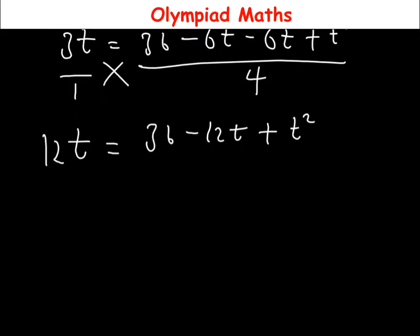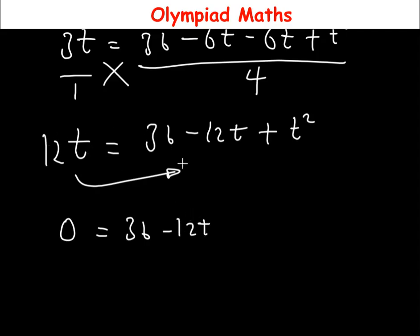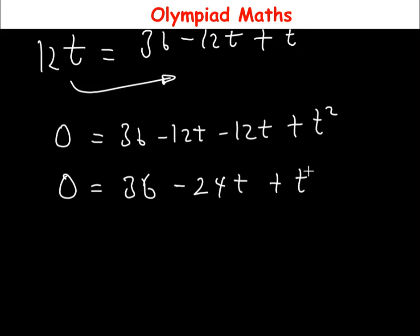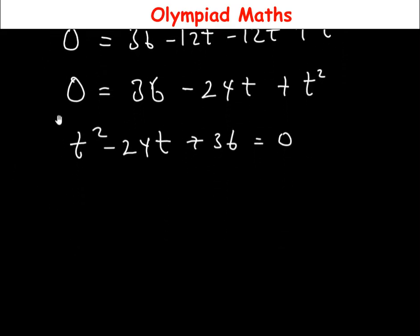From here, 3t can be written as over 1, so multiplying both sides by 4 gives 12t = 36 − 12t + t². Moving 12t over to the other side: 0 = 36 − 12t − 12t + t². Combining like terms: 0 = 36 − 24t + t². Rearranging, we have t² − 24t + 36 = 0, which is a quadratic equation.